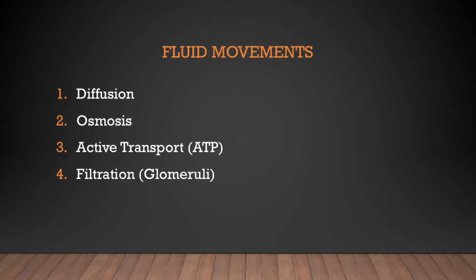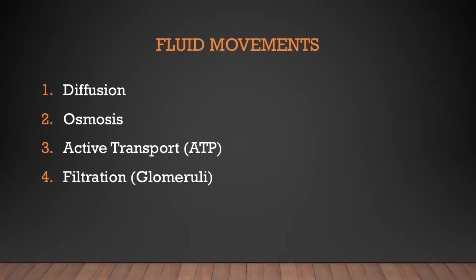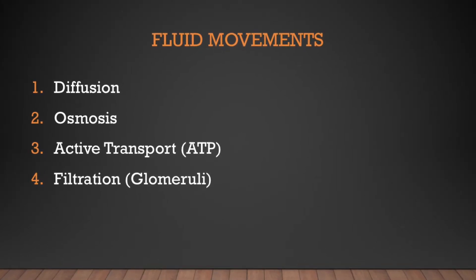Fluid movement — there are four ways fluid moves: diffusion, osmosis, active transport, and filtration. Diffusion is the movement of solutes from an area of high concentration to an area of low concentration. With equal fluid volume on either side of a permeable membrane, solutes will travel across that membrane to even out their distribution. That's diffusion.